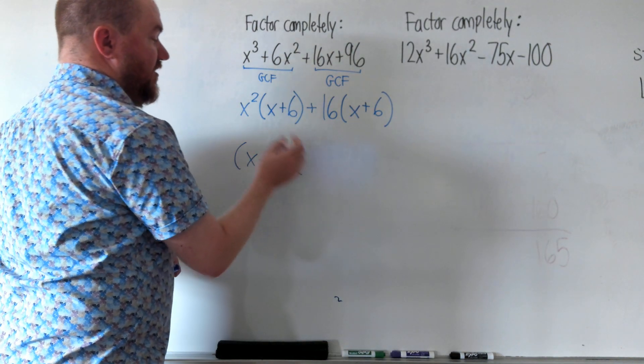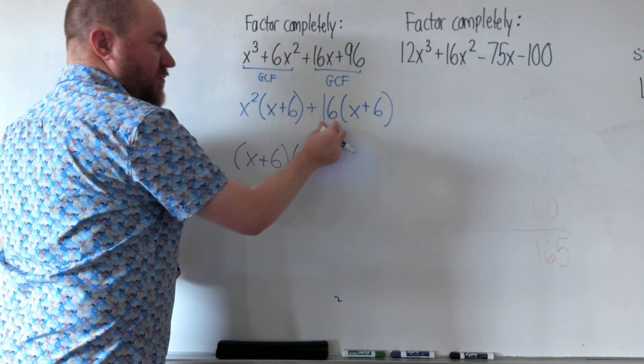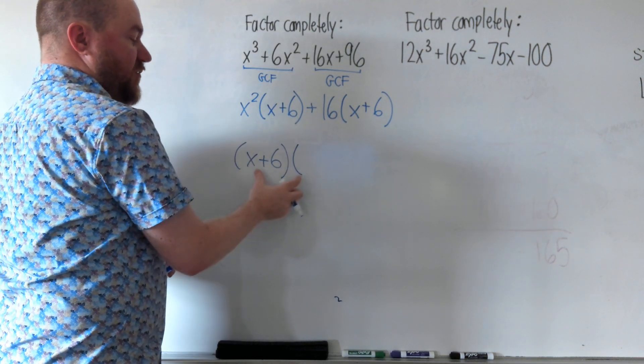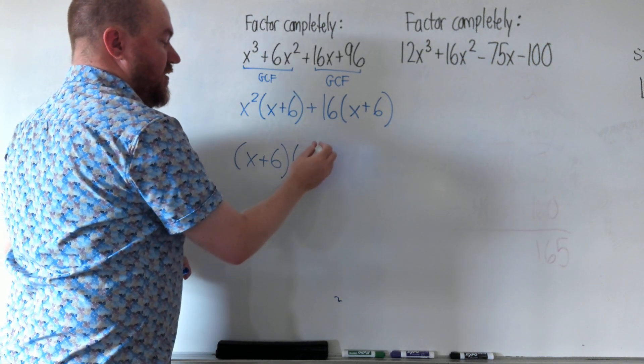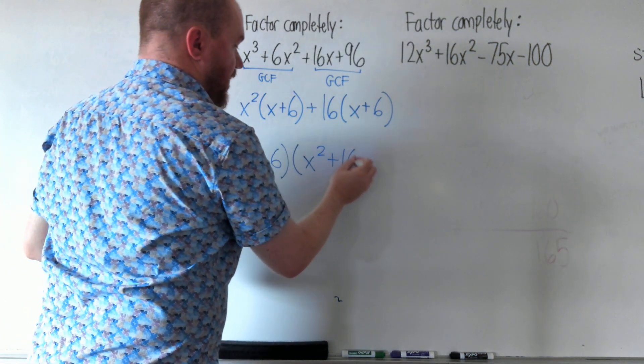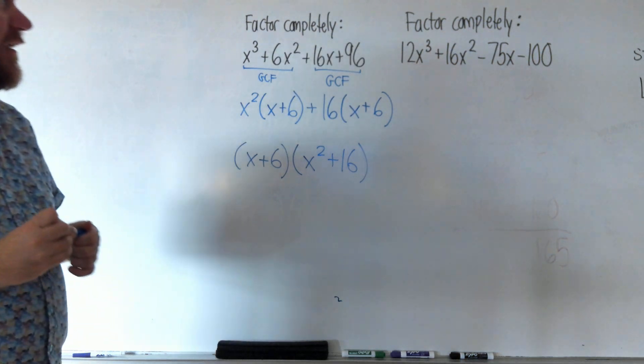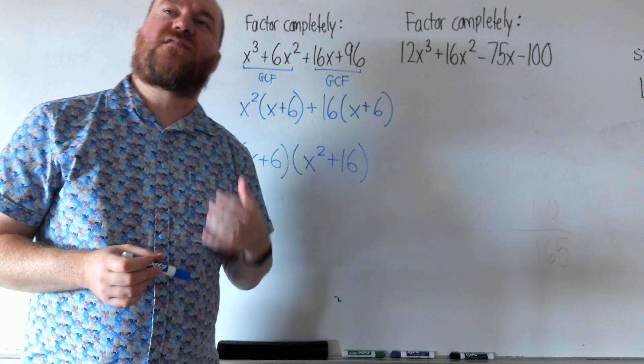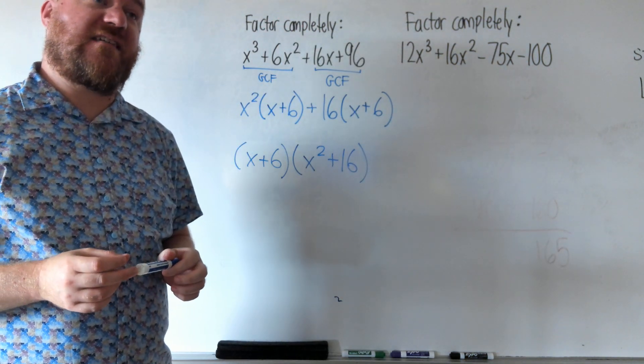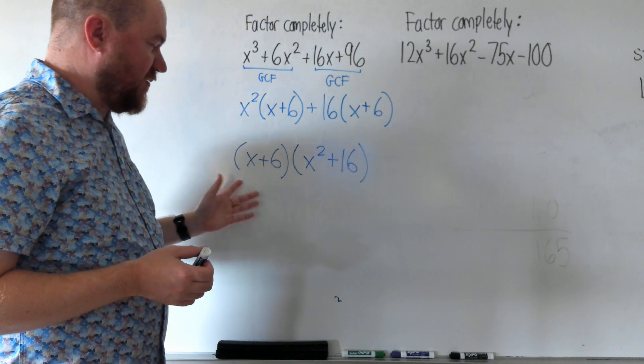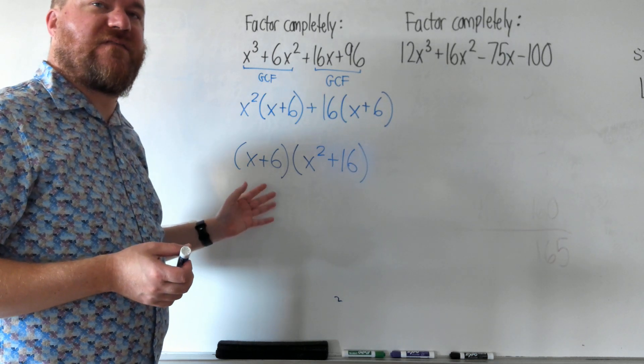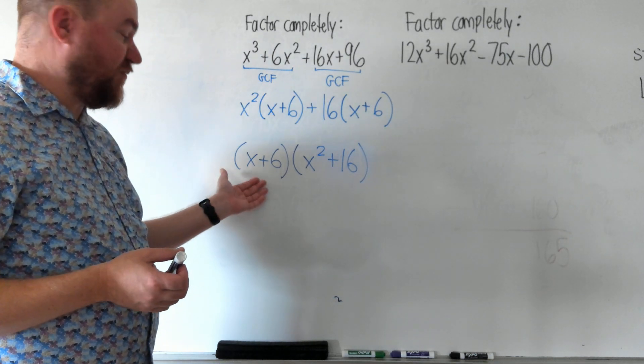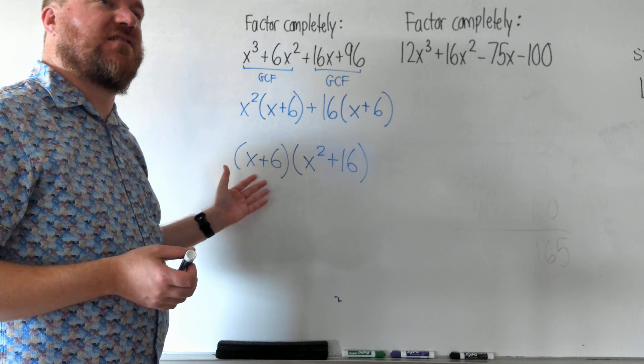The other factor is the stuff in front of each parentheses. Technically, x + 6 is the GCF, and what's left over is what goes in the other parentheses. Now this question says factor completely. The reason they say that is sometimes after you're done doing this process, one of these parentheses or both might need to be factored some more.